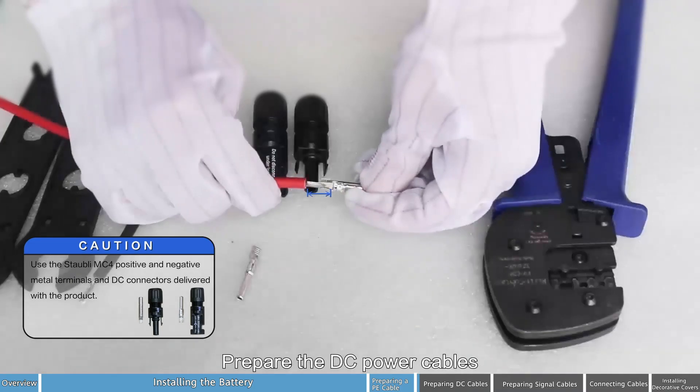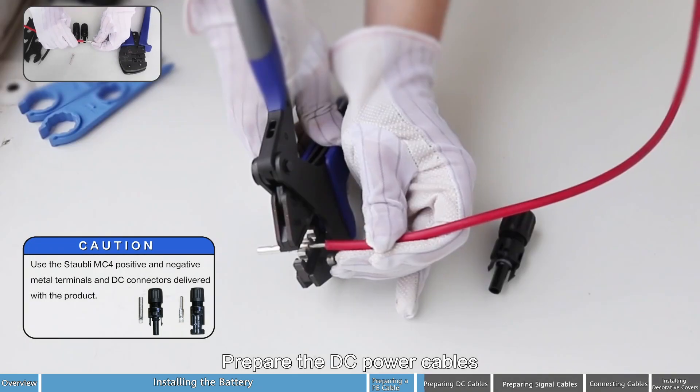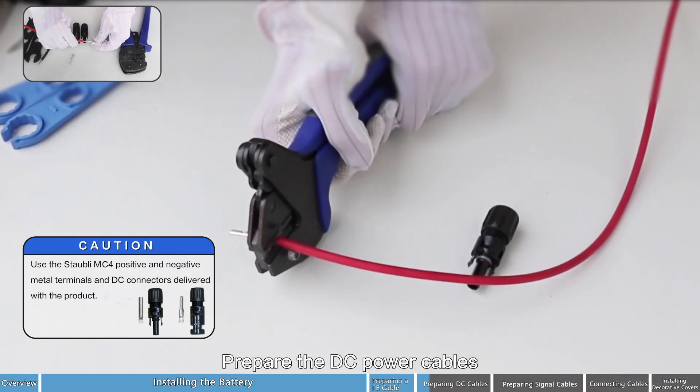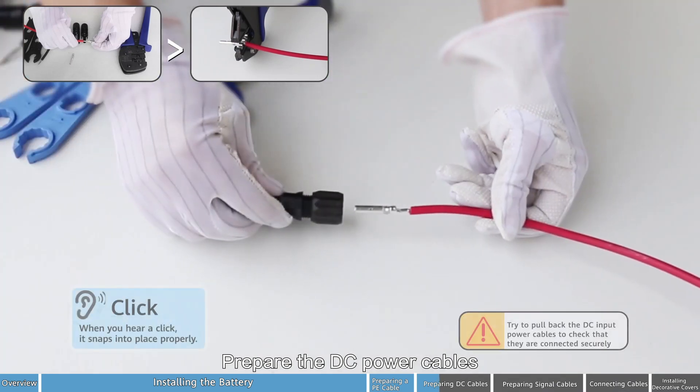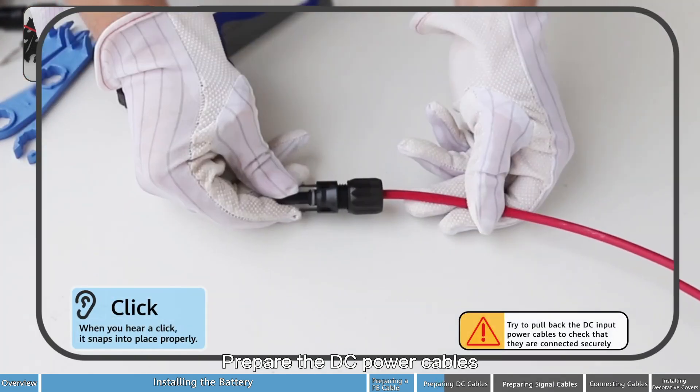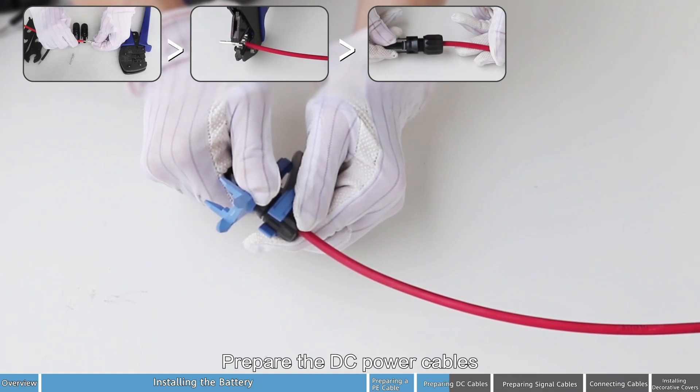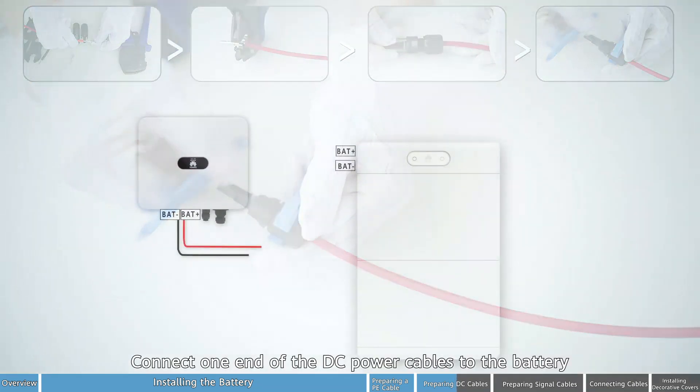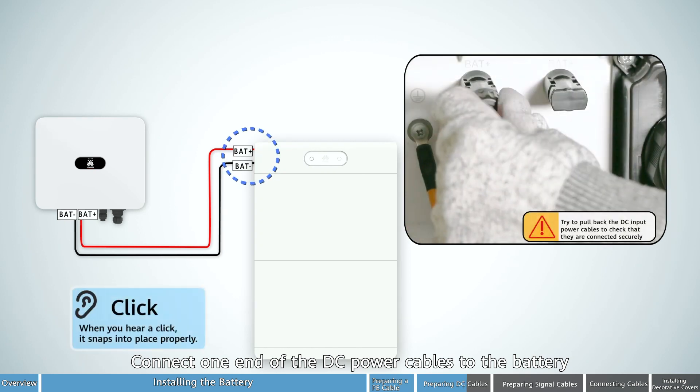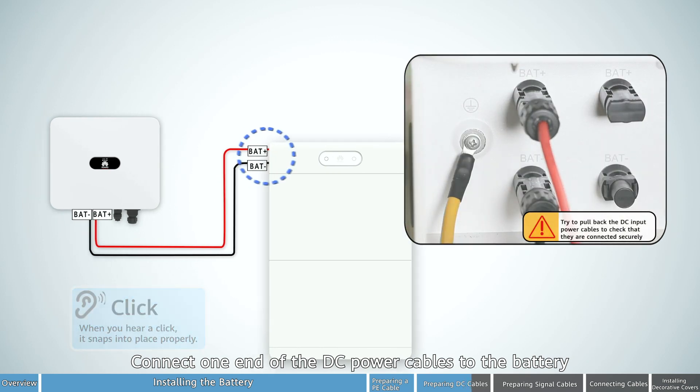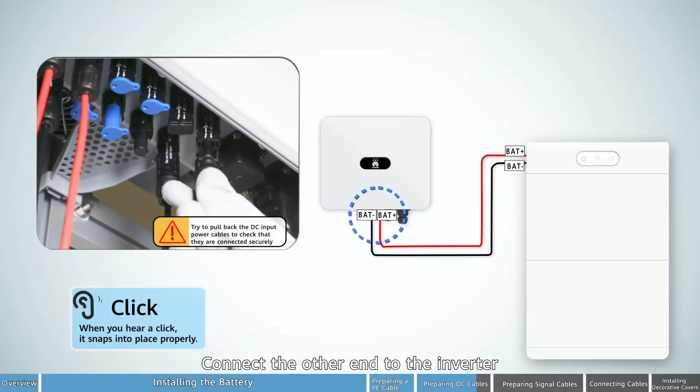Prepare the DC power cables. Connect one end of the DC power cables to the battery. Connect the other end to the inverter.